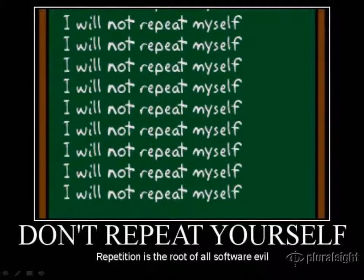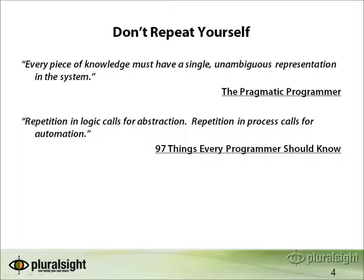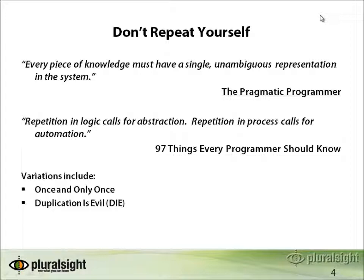If you've been following this series, you probably know that I like these motivational posters. This one I produced myself — it shows that the punishment for repeating yourself should be something like writing on the chalkboard. I believe that repetition is the root of all software evil, and that most of the major problems and bugs that make software difficult to maintain could be avoided through proper use of the Don't Repeat Yourself Principle. This principle was first coined in the Pragmatic Programmer book and stated as: every piece of knowledge must have a single unambiguous representation in the system. In the book 97 Things Every Programmer Should Know, I noted that repetition in logic calls for abstraction, and repetition in process calls for automation. Variations of the DRY principle include once and only once, as well as duplication is evil.